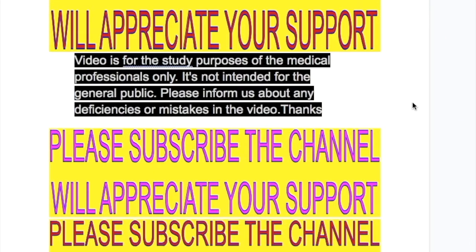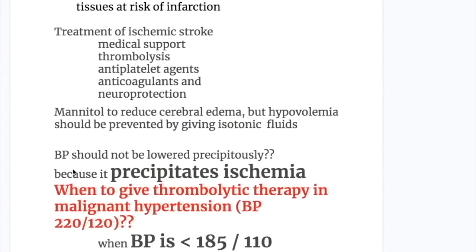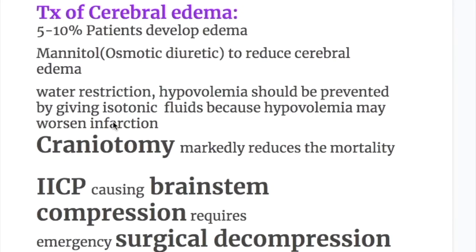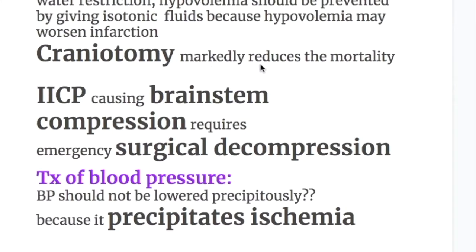Treatment of ischemic stroke generally includes medical support, thrombolysis, anti-platelet agents, anticoagulants, and neuroprotection. For cerebral edema — which affects 5 to 10% of patients — mannitol and osmotic diuretics reduce edema, and water restriction is used. However, hypovolemia must be prevented by giving isotonic fluids, as hypovolemia may worsen infarction. Craniotomy markedly reduces mortality. Increased intracranial pressure causing brainstem compression requires emergency surgical decompression.